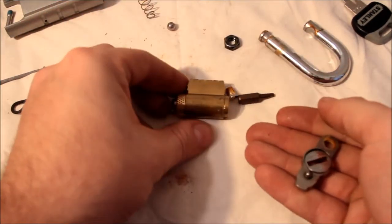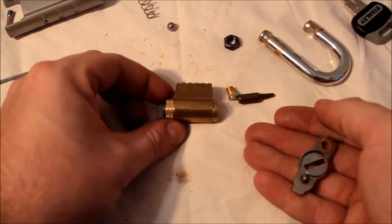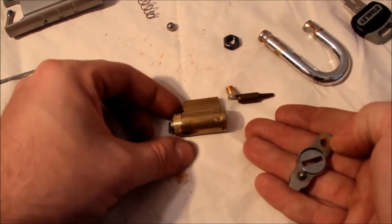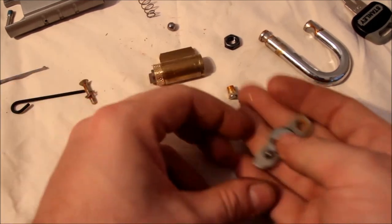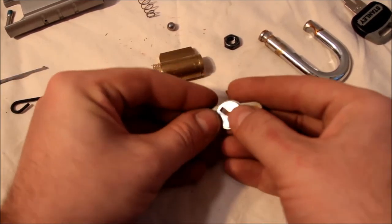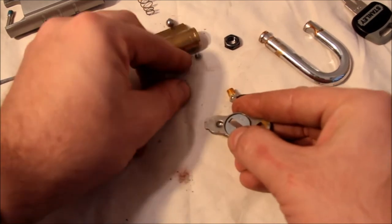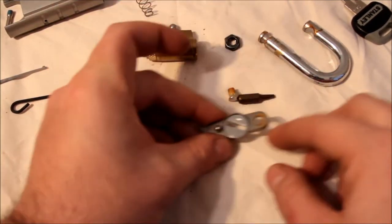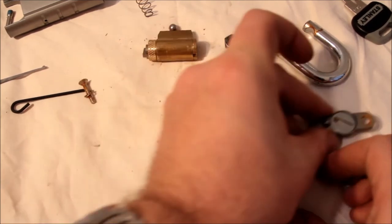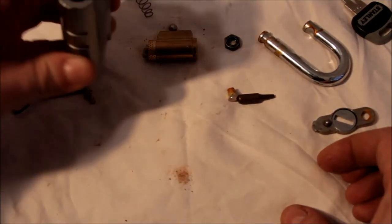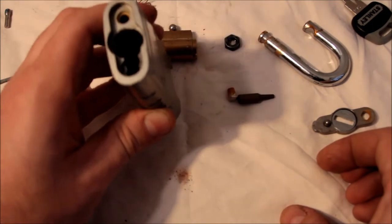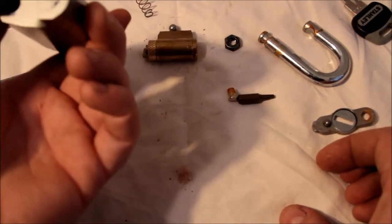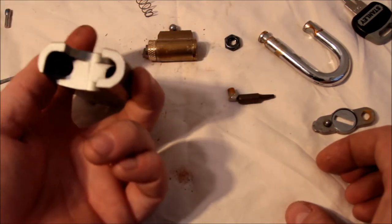So we see a kind of Schlage-looking block or cylinder. We see, appears to be, just a little another ball-bearing detent that keeps this in place. A little more rust here. And let's see what else is going on in there. And the other ball-bearing is there.